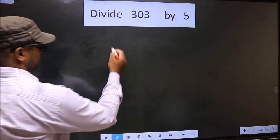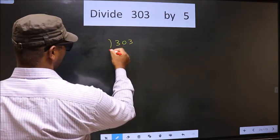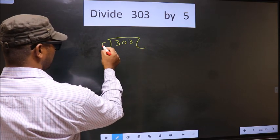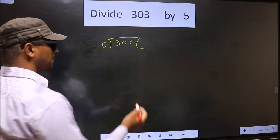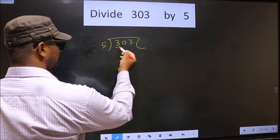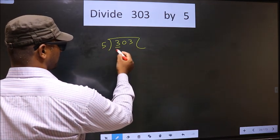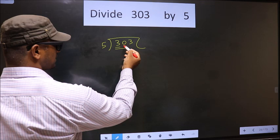See, that is 303 and 5 here. Okay. Next. Now here we have 3. 3 is smaller than 5, so we take two numbers, that is 30.